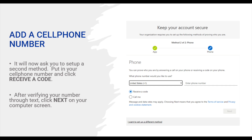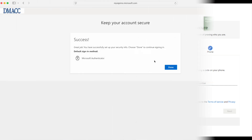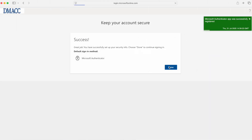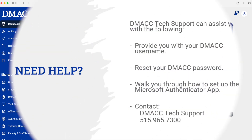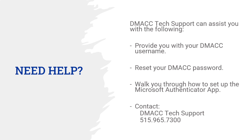The following step will require you to add a cell phone number to receive a code. After verifying that code, click next. Congratulations, you have officially set up the Microsoft Authenticator app. If you run into any issues throughout this process, please contact DMACC Tech Support Office at 515-965-7300.